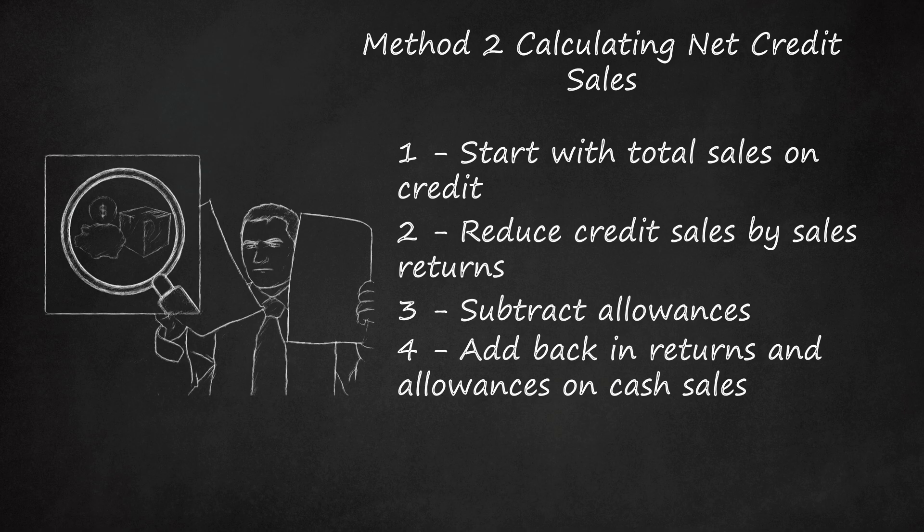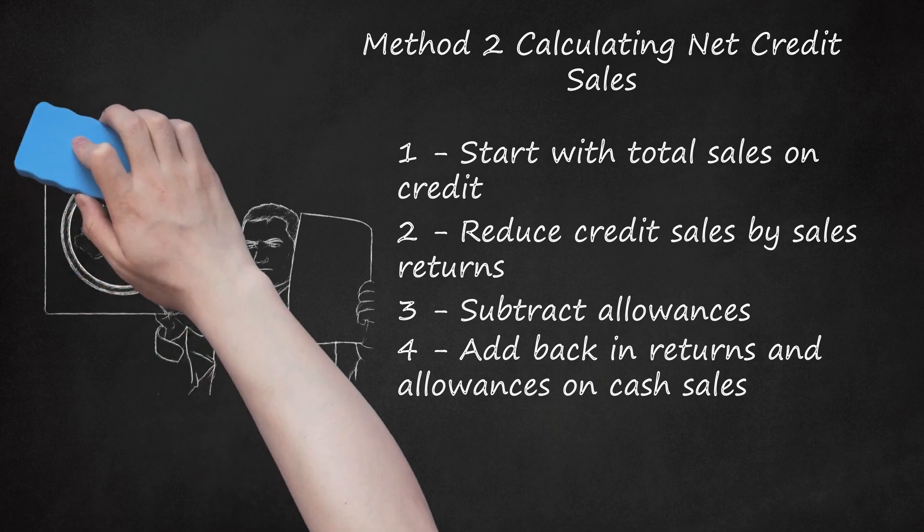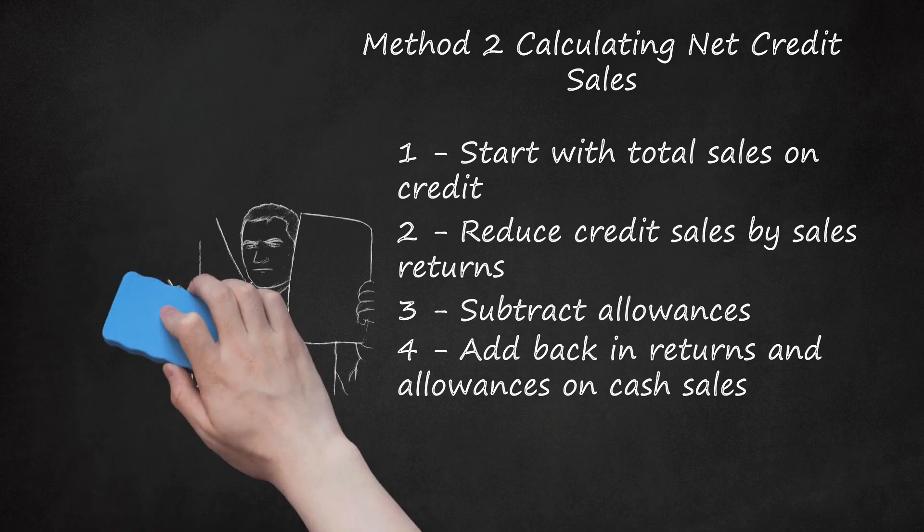For example, if the previous company determined that $5,000 worth of its returns were actually made on cash sales, it would have to increase its net credit sales value by $5,000. This would give a net credit sales value of $175,000 plus $5,000 or $180,000.